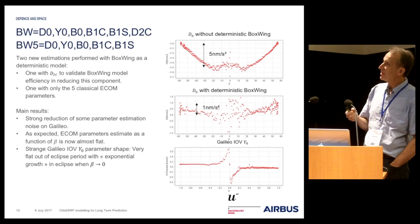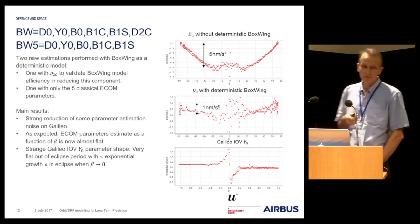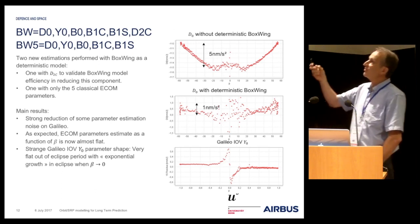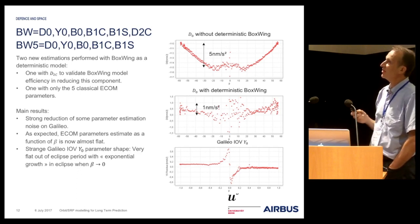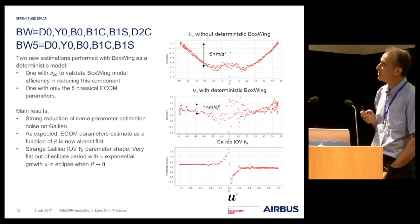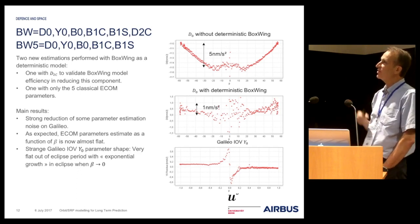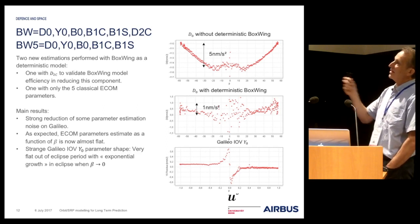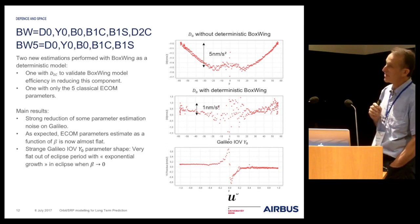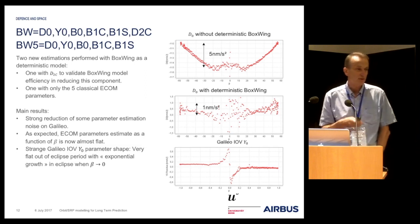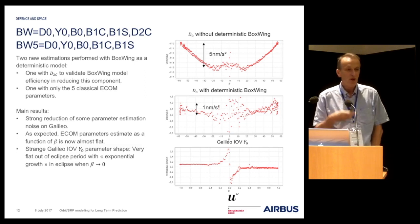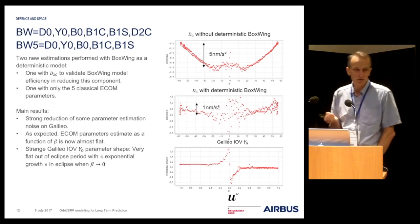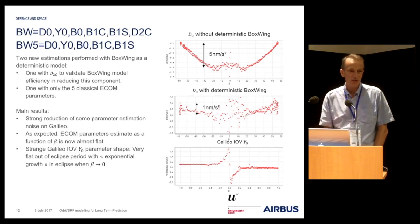We continue by removing the coefficients we think are unnecessary and adding the boxwing model. The objective is to flatten the curves of the ECCOM parameters. On top you have the original D0 coefficient shape with respect to the sun declination, and the second curve shows the result after adding the boxwing model. The curve is now much more flat, which is what we expected in order to make a long-term prediction.